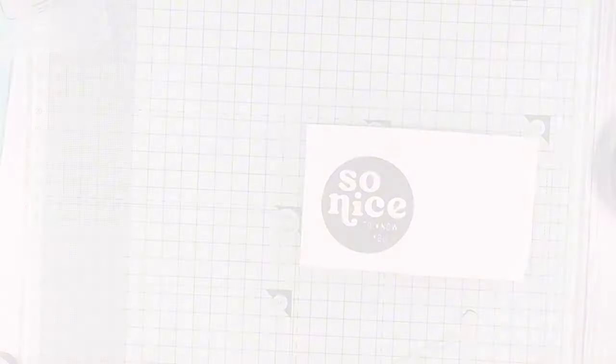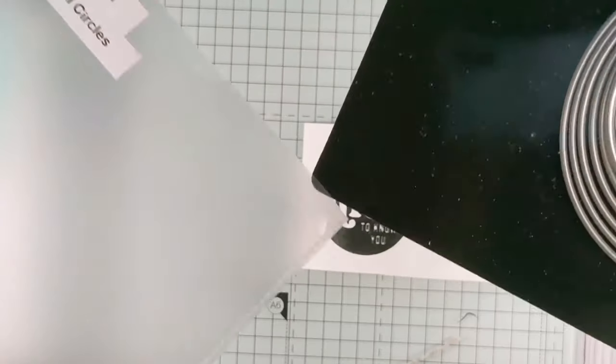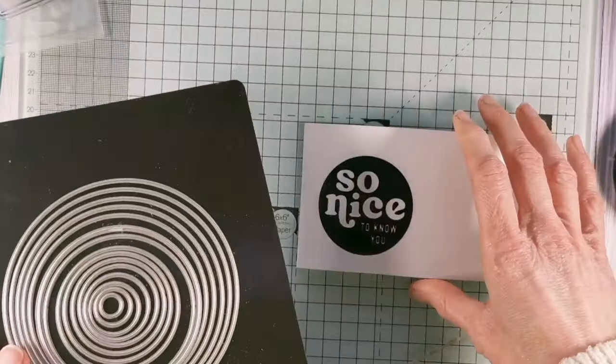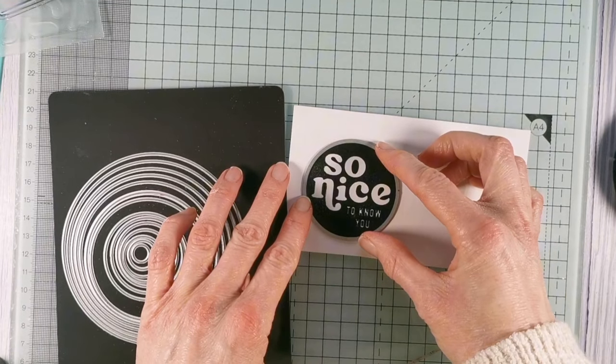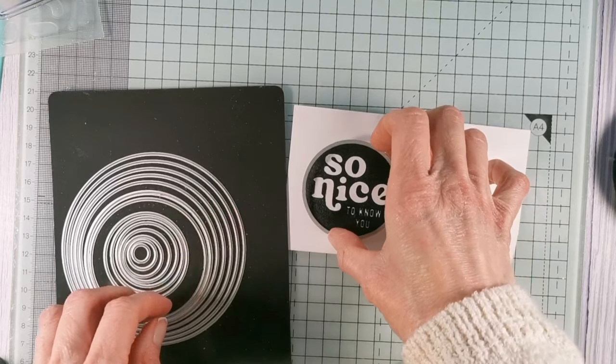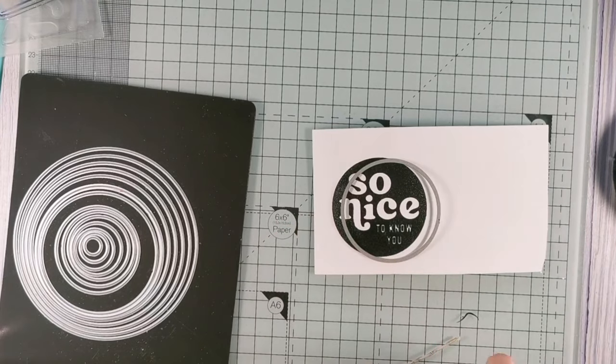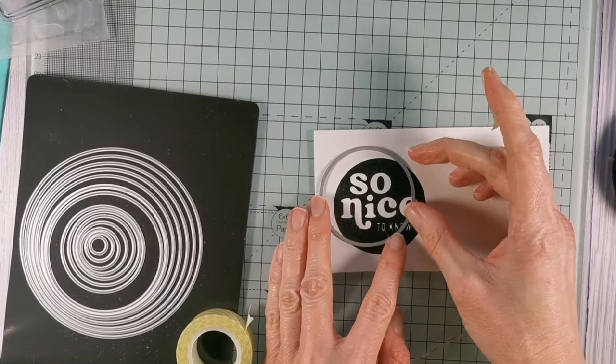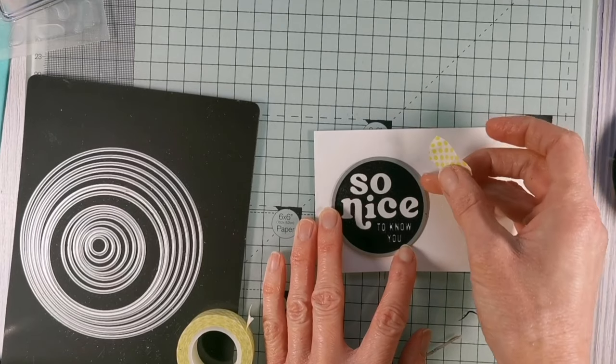I don't actually have any coordinating dies for this set, so I'm just grabbing my additional circles nesting dies from Waffle Flower. They always seem to have a circle of just the right size whenever I need something, and this one I think fits just perfectly. So I'm going to grab some washi tape, adhere that to my stamp sentiment, and then I'm going to run that through my die cutting machine.